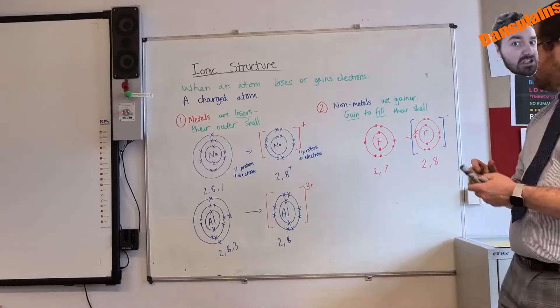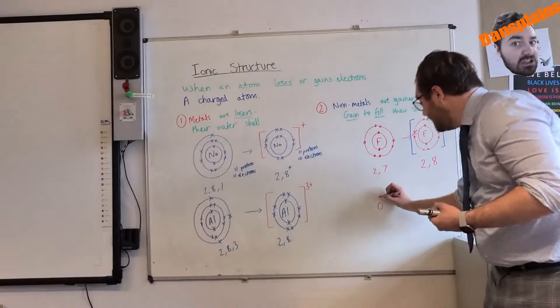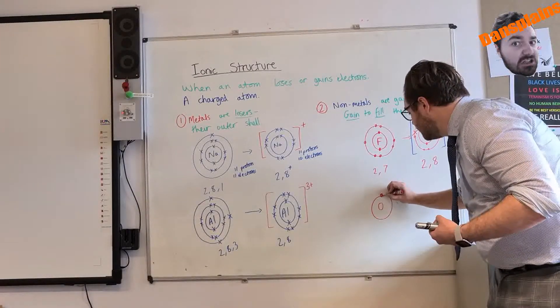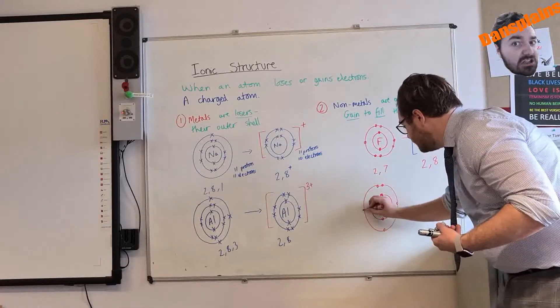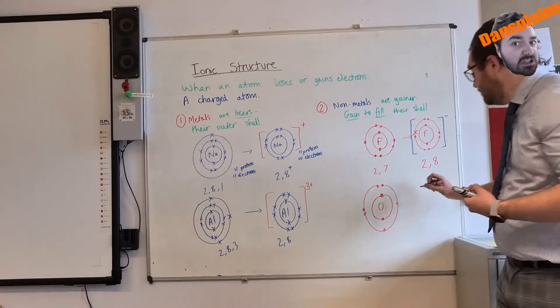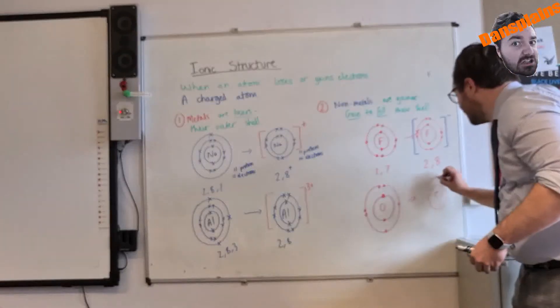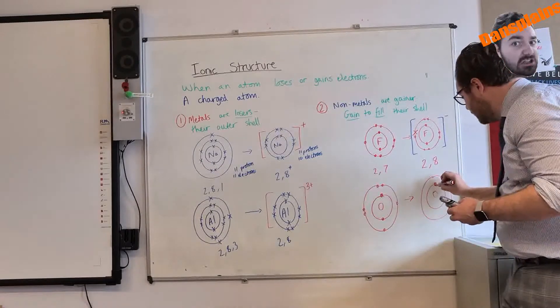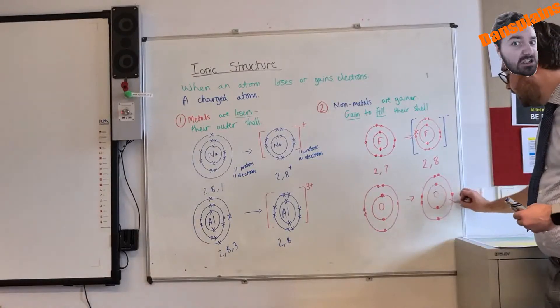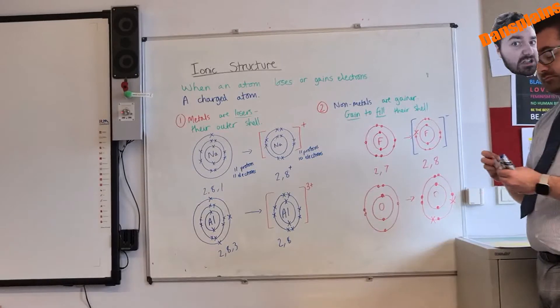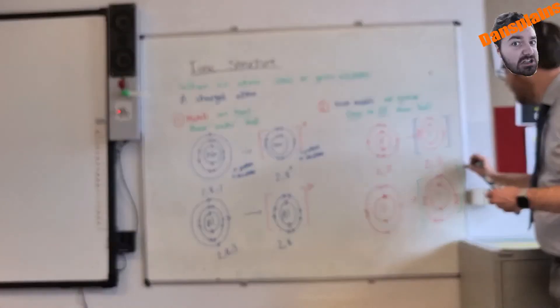Now we can do this again. I'll use oxygen. Oxygen began as 2, 6. It now has those two gaps left open. It gains to fill those two gaps - 1, 2, 3, 4, 5, 6. To gain to fill those gaps makes it 2, 8, which is 2, 8, minus 2 charge.